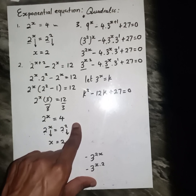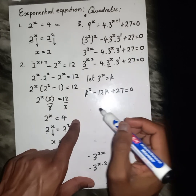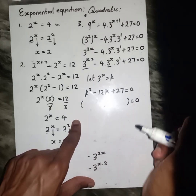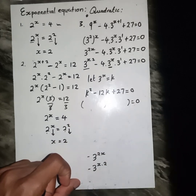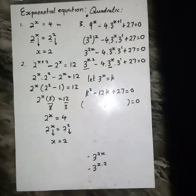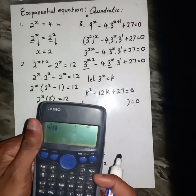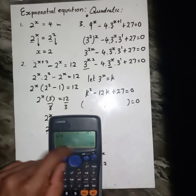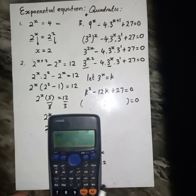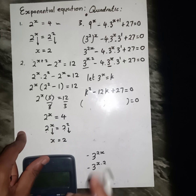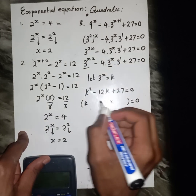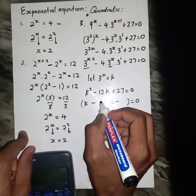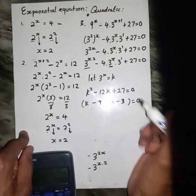Now we're going to factorize. What are the factors of 27 that add up to 12? 9 times 3 gives 27 — yes. And 9 plus 3 gives 12 — yes. So I'm going to write: k squared minus 9k minus 3k plus 27 equals zero, which factors as k minus 9, times k minus 3 equals zero.